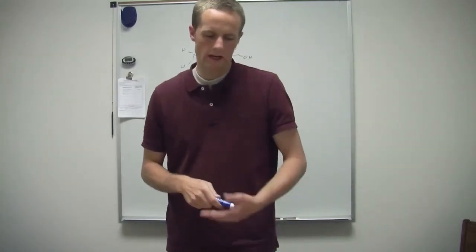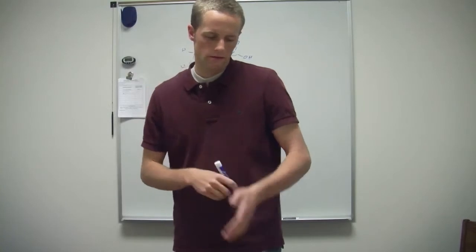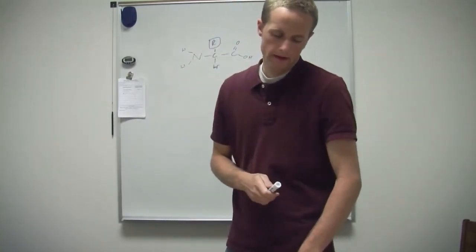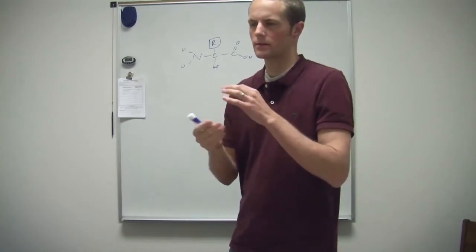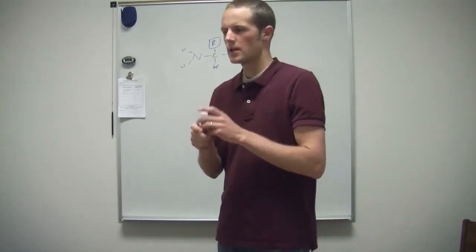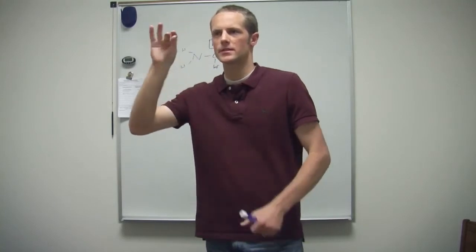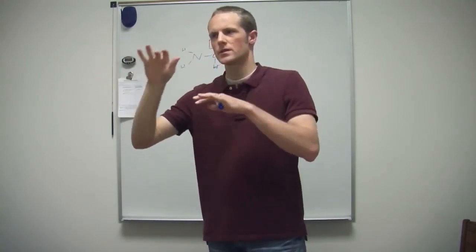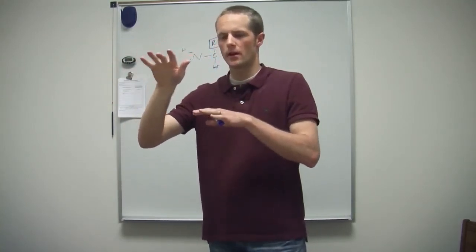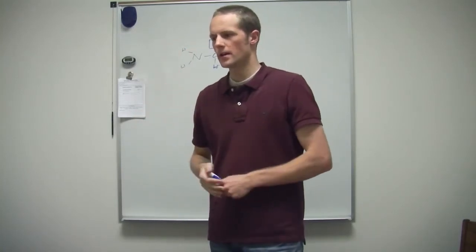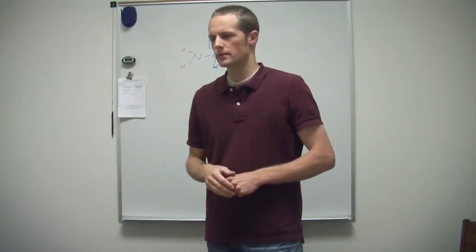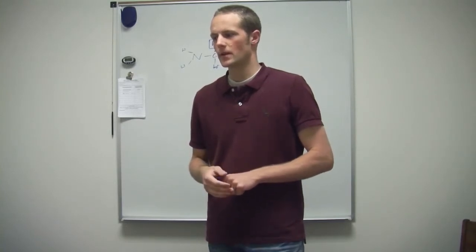And then, what it is, is the side chains, so the R groups, they are what kind of determine the protein folding. Okay. Or like the structure? So, yeah. So the amino acids in their sequence with the side chains, the way they are, will cause the protein to fold a certain way, and it'll always fold that certain way. If it doesn't, then we have problems.